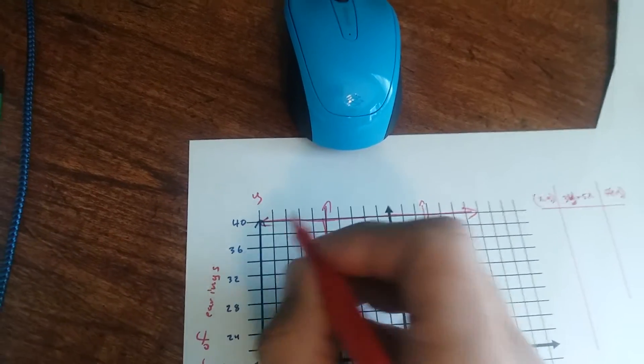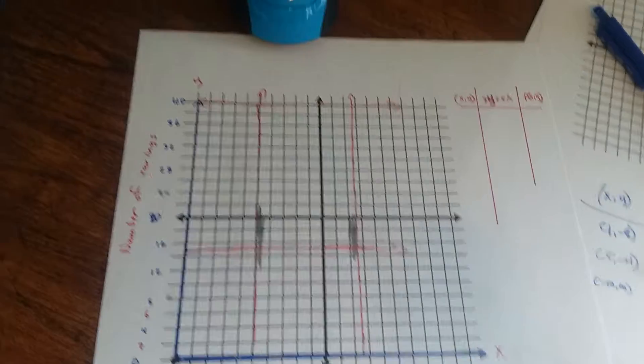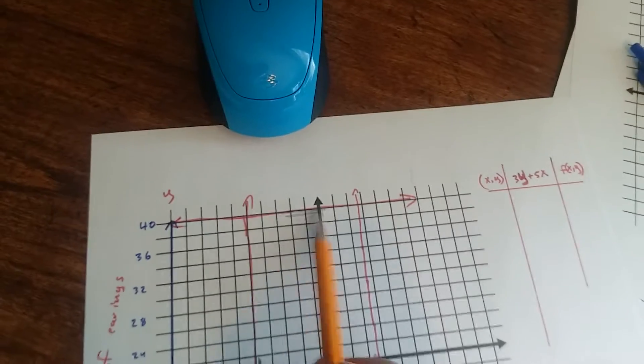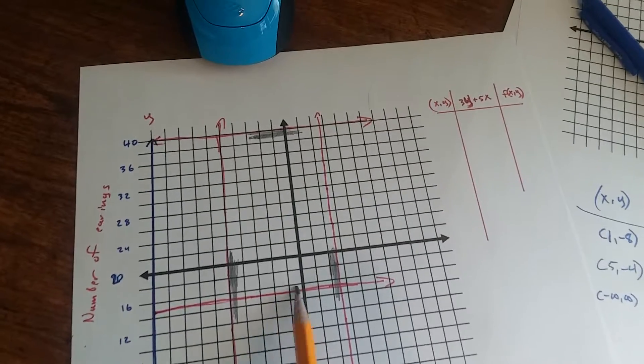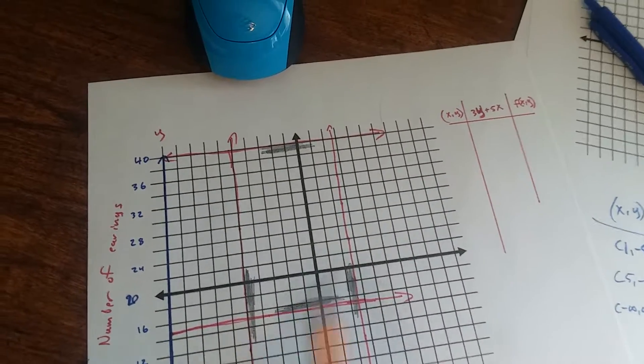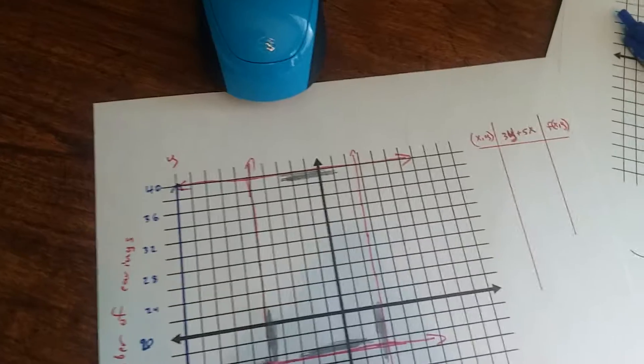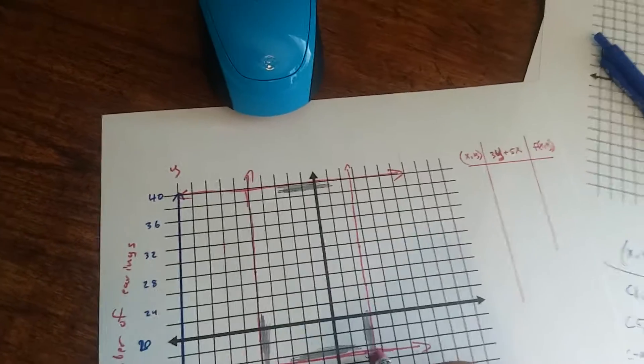Okay, the number of earrings has to be less than 40, so you're underneath that line. But it has to be greater than 15, so you're above this line. So, of course, I need to erase this little bit here because I shaded on the wrong side there.